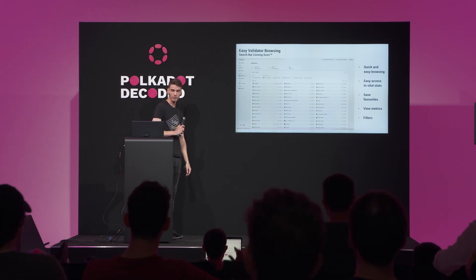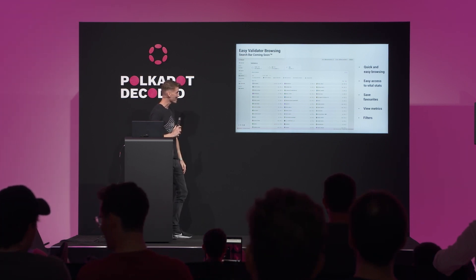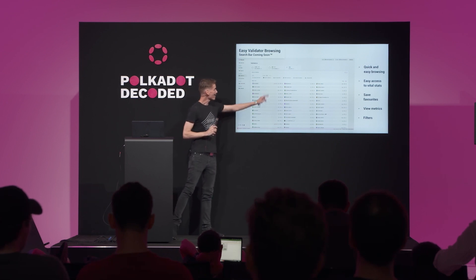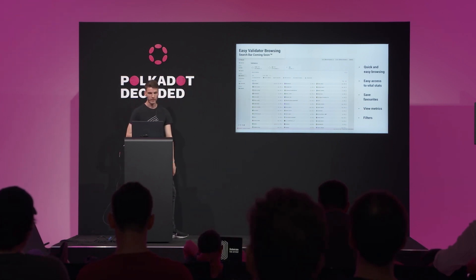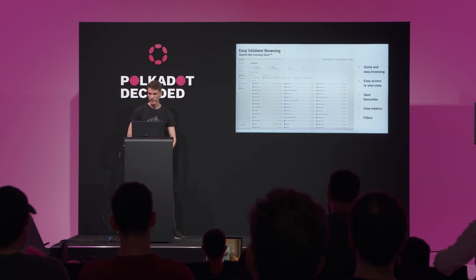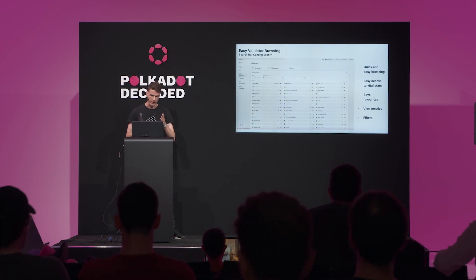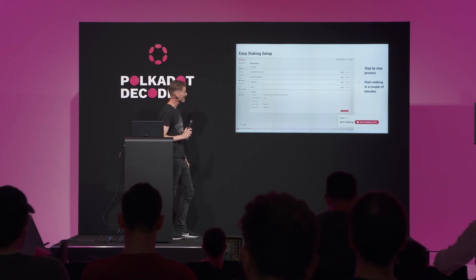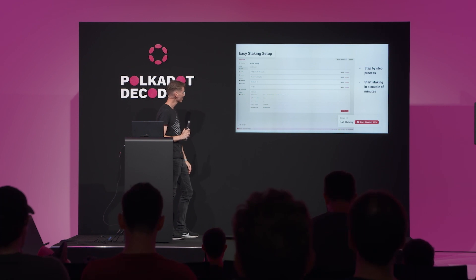Easy validator browsing — another low-hanging fruit we've tried to address. We've gone with a paginated approach, because browsers are really bad at rendering super long lists of validators. Easy access to commissions, oversubscribed status. This metric here is the minimum reward bond you need for a validator — it changes every era, but it's still a good metric. We can save our favorites, view metrics, era point history, and apply filters for nominators. We've included all the ones we think are important for choosing validators, such as missing identity. And all this comes together to create a very easy step-by-step process to start staking — it should just take a couple of minutes.